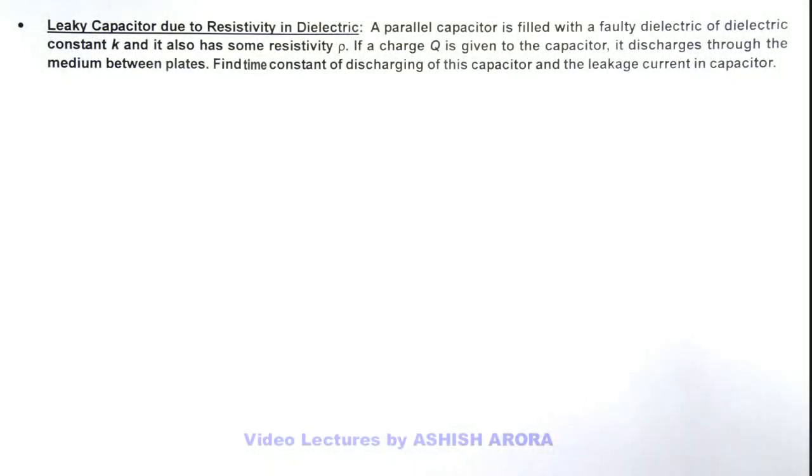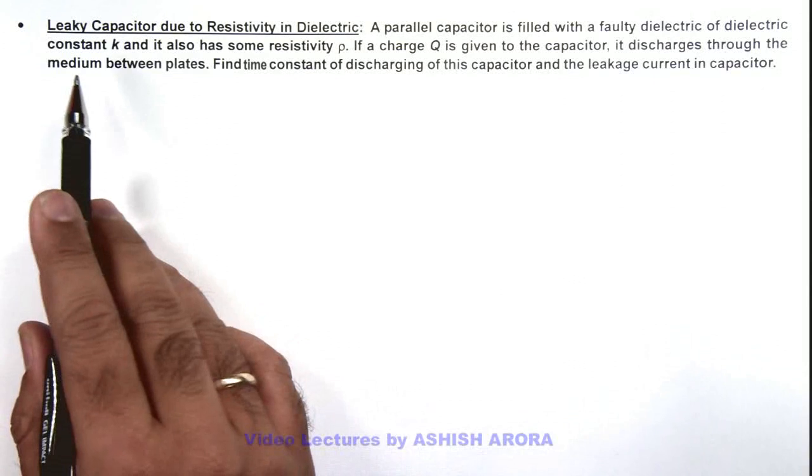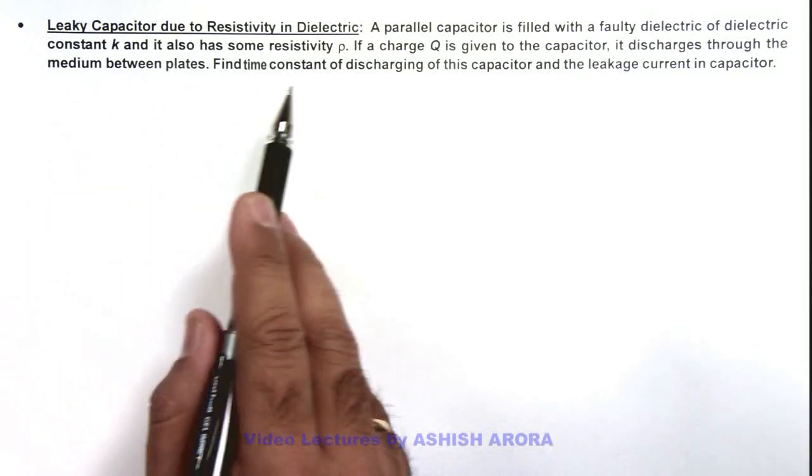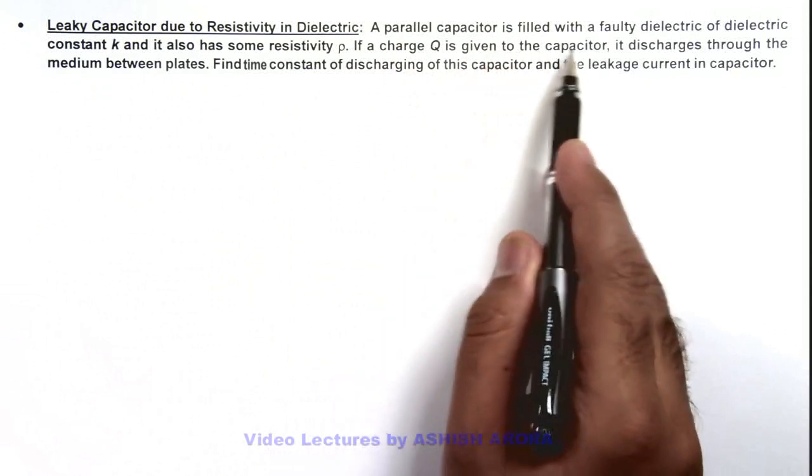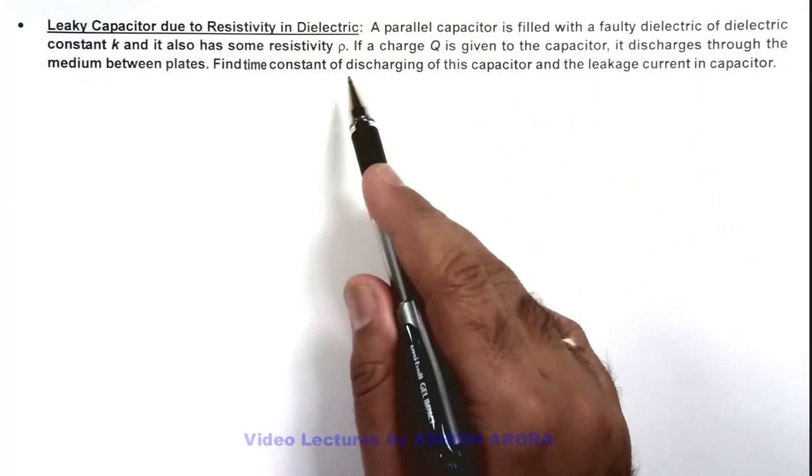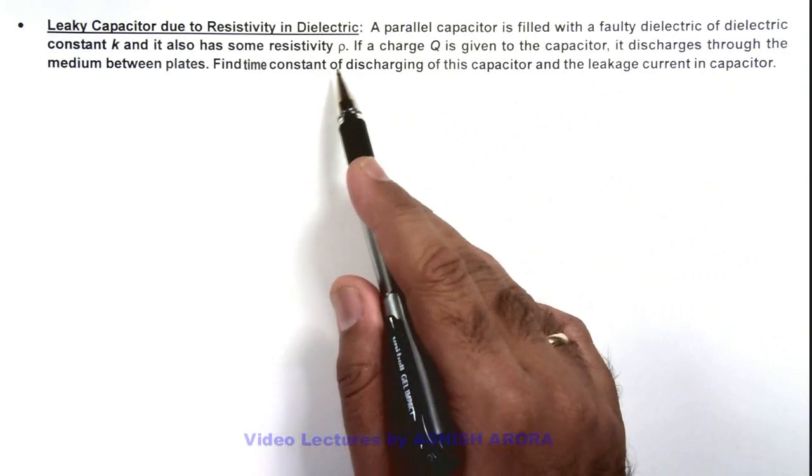In this illustration, we will study about the leaky capacitor due to resistivity in dielectric. Here we are given that a parallel capacitor is filled with a faulty dielectric of dielectric constant k and it also has some resistivity rho.